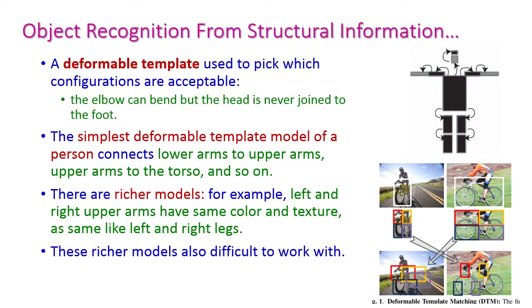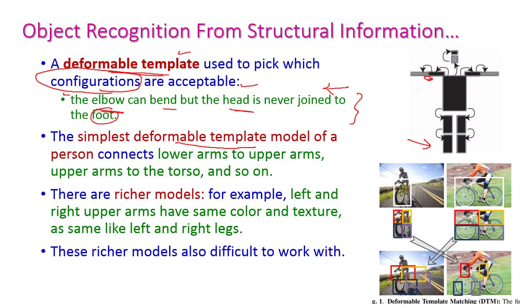Here we have the deformable template, which is used to pick an acceptable configuration. For example, the elbow can bend, but the hand can never join to the foot. So we can design a template for a particular person. The diagram shows the simplest deformable template model for a person, where the parts are connected to each other — the lower arms and upper arms are connected, the hands are connected to the body, the legs are connected, and the head is connected.